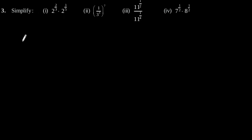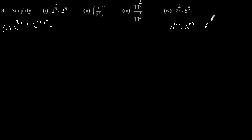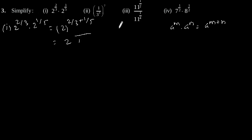Exercise 1.6, question number 3, first part: 2 to the power 2 by 3 into 2 to the power 1 by 5. Here, by using the formula a to the power m into a to the power n is equal to a to the power m plus n, this will become 2 to the power 2 by 3 plus 1 by 5. Solving this, we get 2 to the power 10 plus 3 by 15, which is equal to 2 to the power 13 by 15.